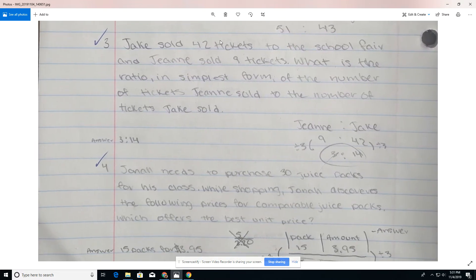Number three, Jake sold 42 tickets to the school fair and Jeannie sold nine tickets. So those are going to be our data points here. Jake selling 42, Jeannie selling nine. What is the ratio in simplest form? I asked students to circle this. Obviously they couldn't do that online, but this would be something that they would note in their handwritten work on a scratch piece of paper. That simplest form is what's being asked for. That means we may have an extra step. Simplest form of the number of tickets Jeannie sold to the number of tickets Jake sold.